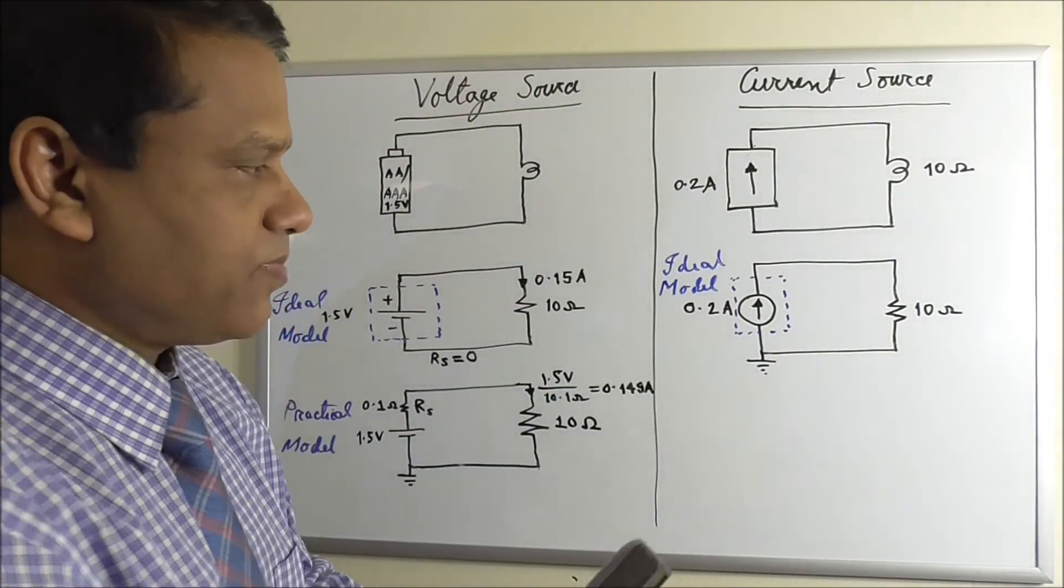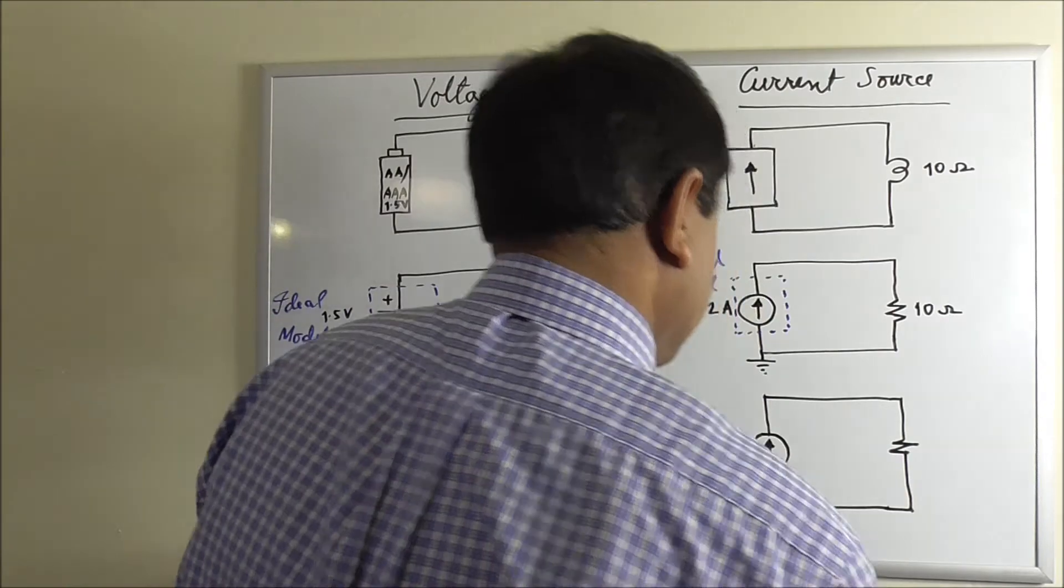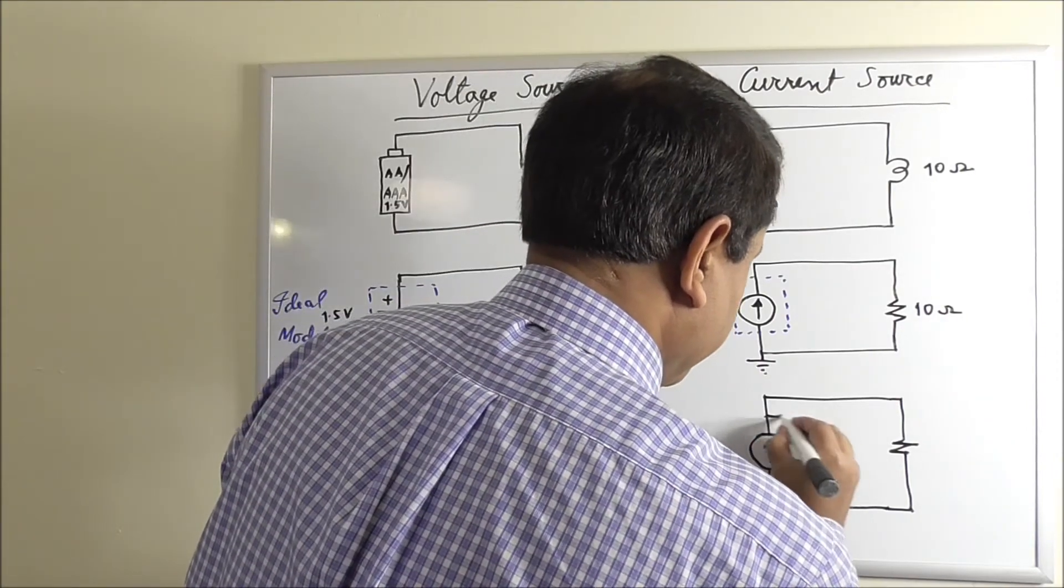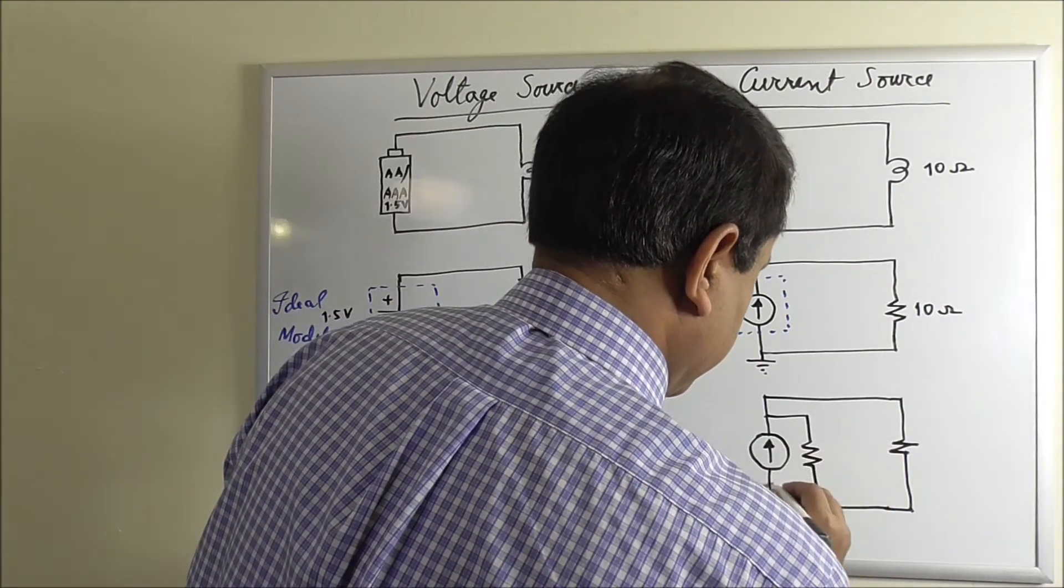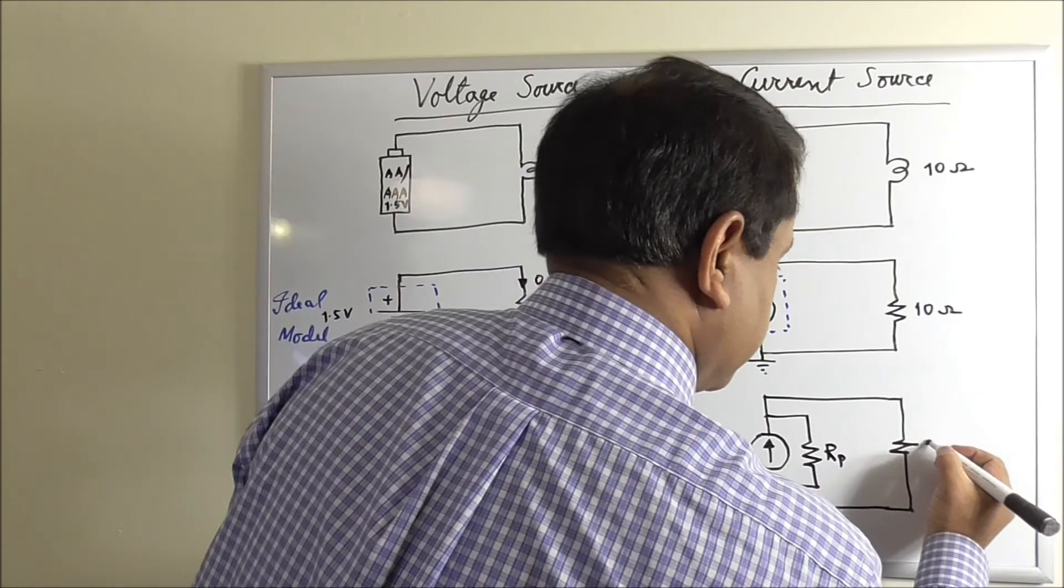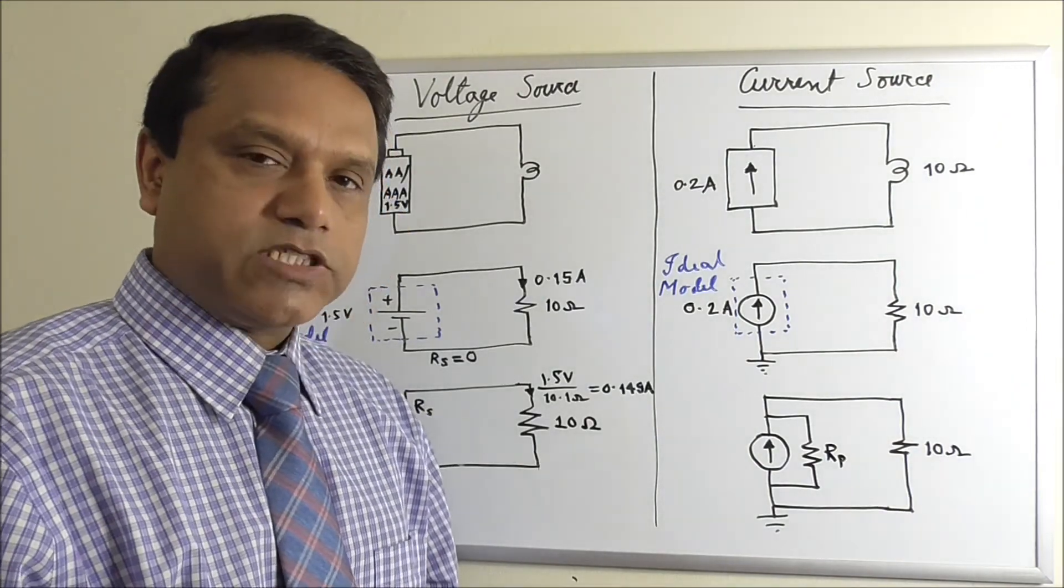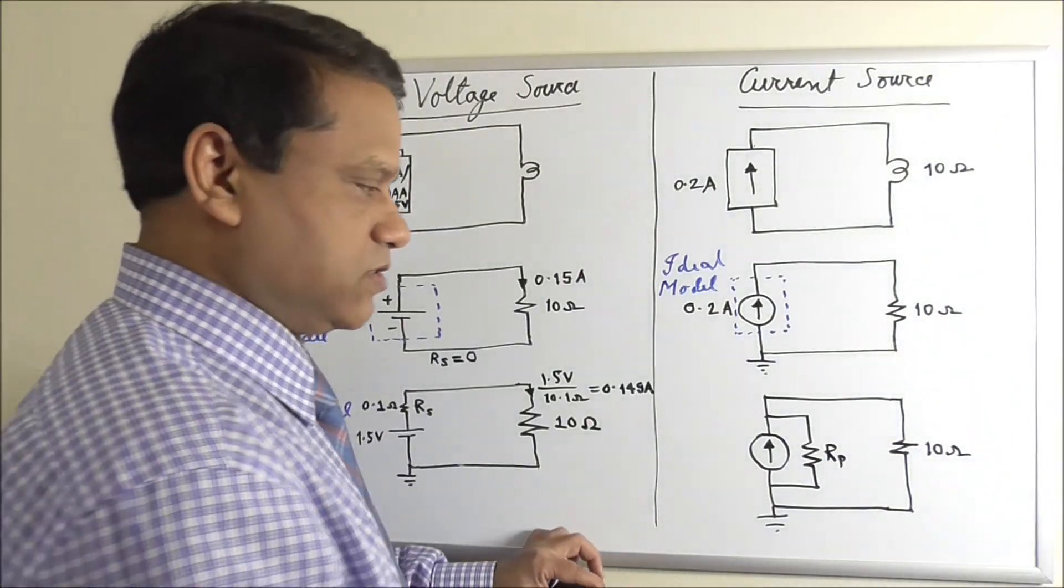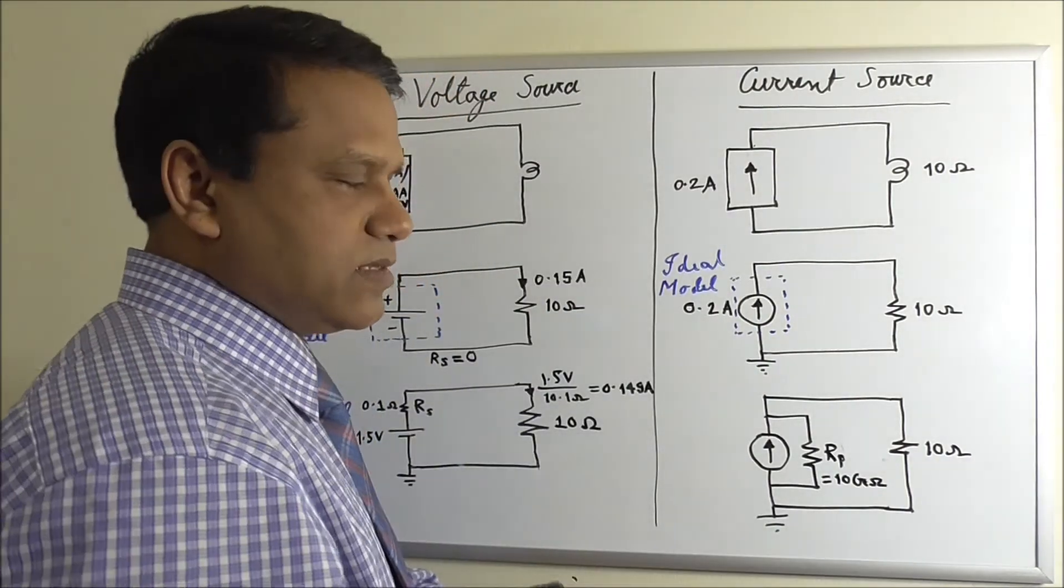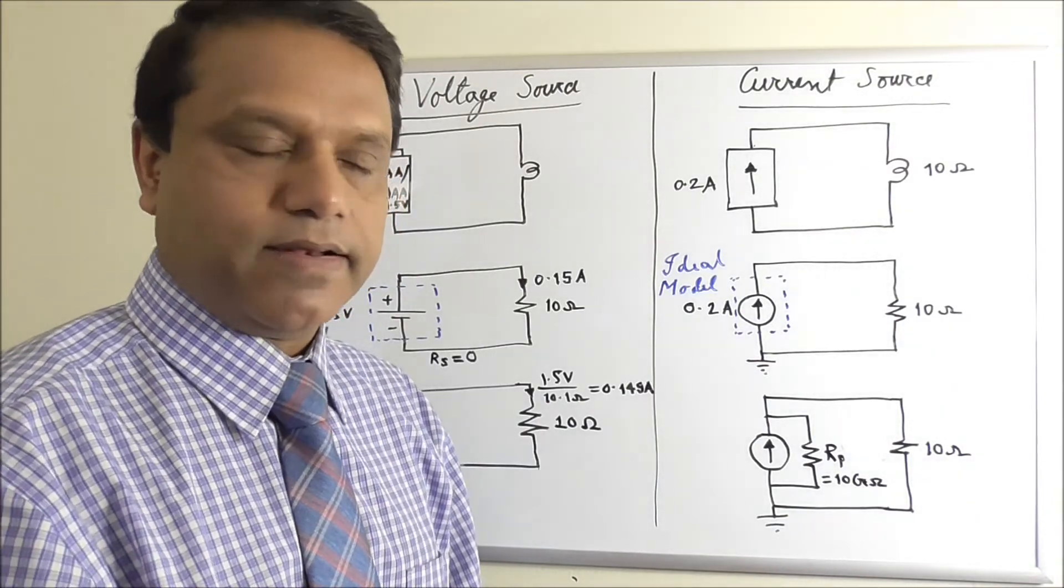And what is the practical model? The practical model has a parallel resistance. So this is 10 ohm load resistance, but the parallel resistance is actually very high for a current source. Let's assume this is 10 giga ohm. So giga is a very high number. That is 1 giga is 10 to the power 9 which is 1 billion.